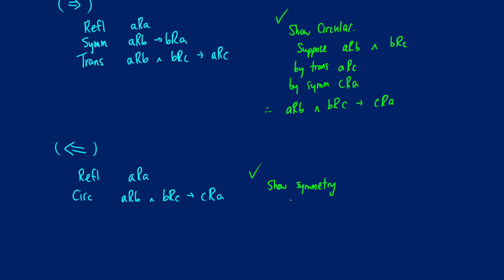So to suppose symmetry, we're just going to start by supposing that we have aRb, and then we want to show that we get bRa out of it. So what we do know is that if b is an element, then by reflexivity, we know that b is going to be related to itself.